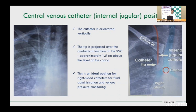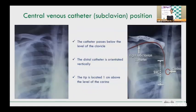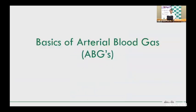If on x-ray the catheter tip has gone slightly too far in, you can temporarily avoid repositioning to reduce procedural risk — but the ideal position must be identified. These are the positions of tube placement and catheters on chest x-ray.